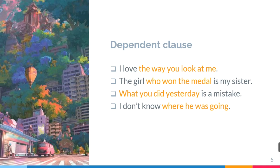The second example: 'The girl who won the medal is my sister.' Previously the example was 'City is my sister.' If you say 'The girl is my sister,' it already makes sense, but perhaps you want to explain more about that girl, so you add a clause. 'Who won the medal' is a clause to explain 'the girl,' and of course we cannot write 'Who won the medal.' as a standalone sentence — it is not acceptable.